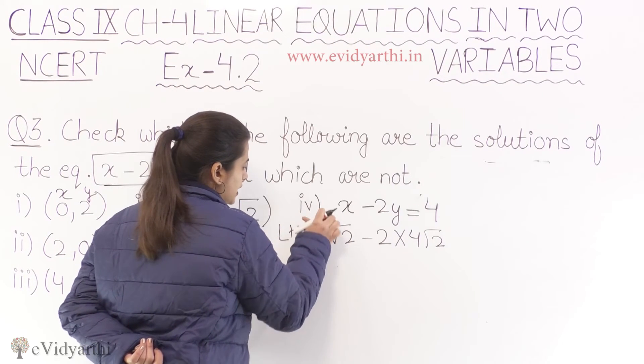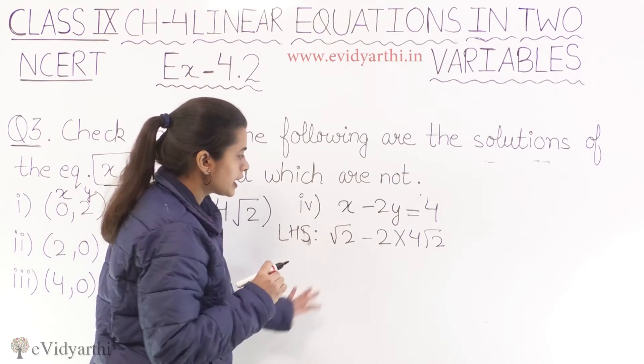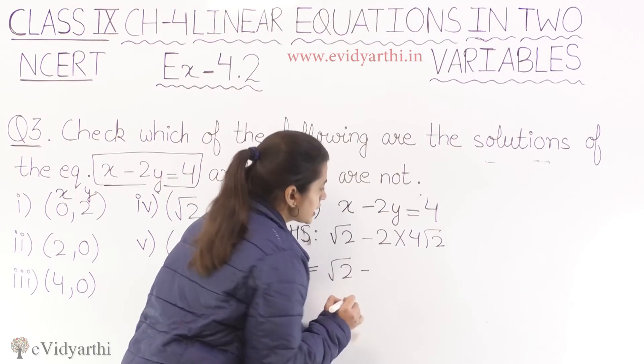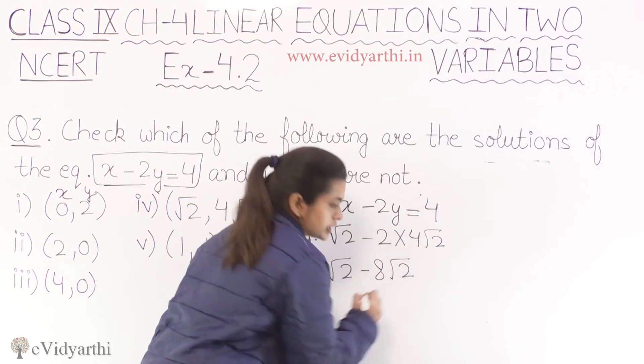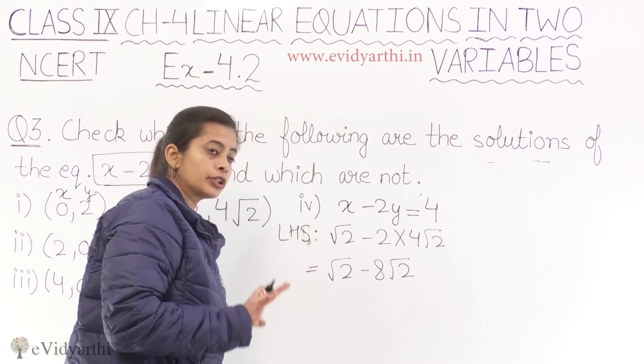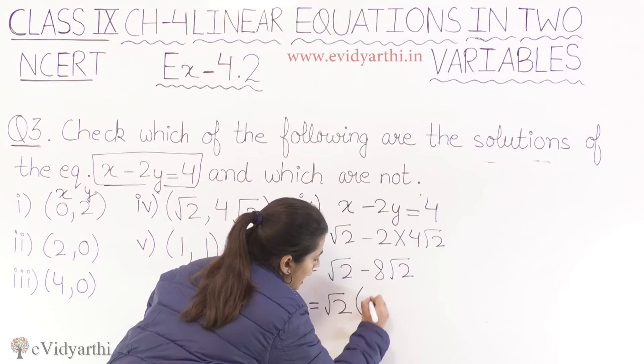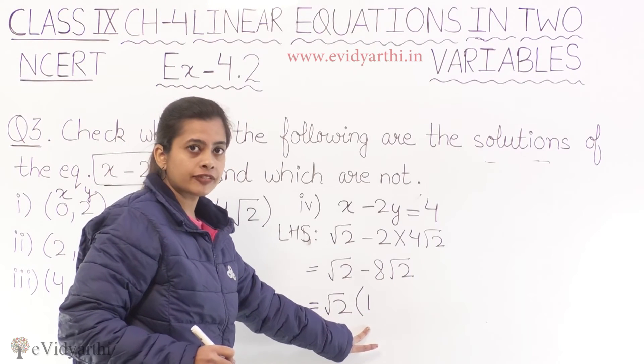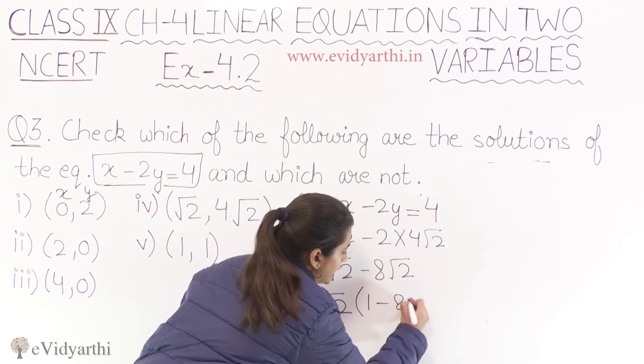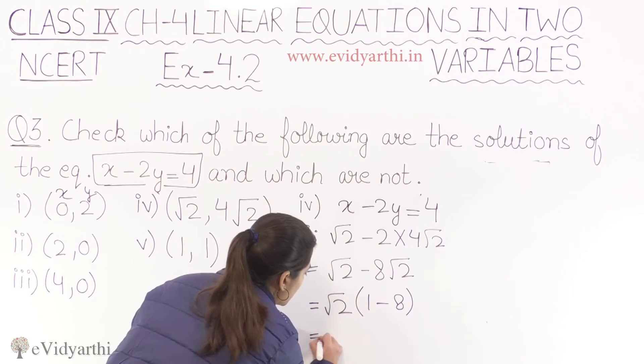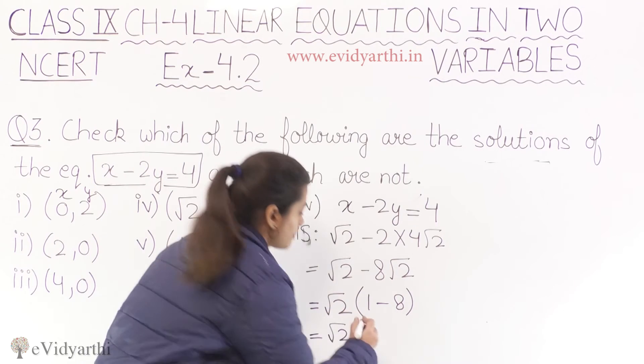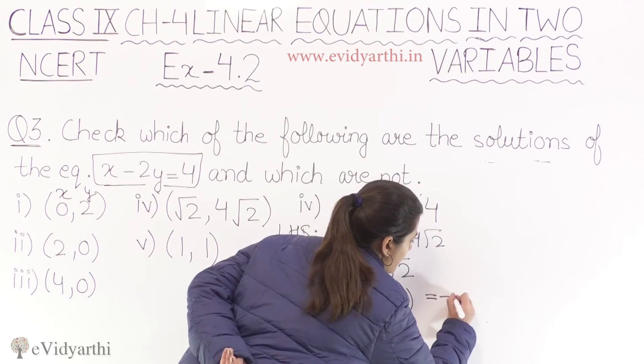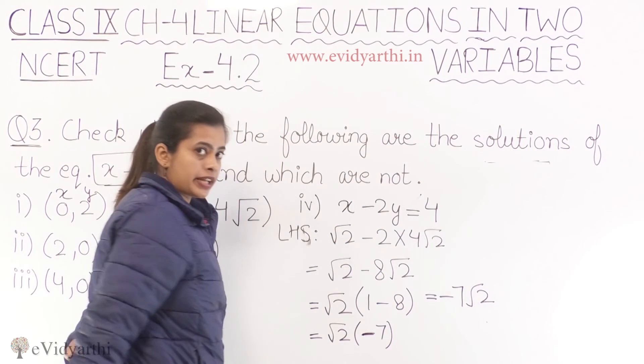So here we have to write the equation again. This is our left hand side. So left hand side ko kya hai? Root two minus 2 into root two into 4. So what we are going to do here? Root two solve karenge. Two into four is eight root two. We have to write root two. What we have left as one. Then here we have to write root two. Yeh bhi ho gaya. Ab kya aa gaya? Root two and then we can solve it minus seven.